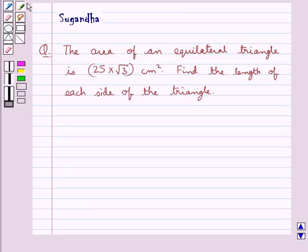Hello and welcome to the session. In this session we discuss the following question which says the area of an equilateral triangle is 25 into root 3 cm squared.